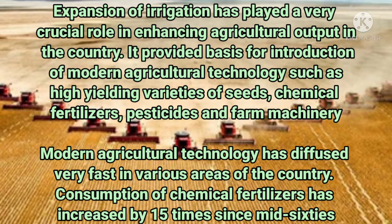What was the growth of agricultural output and technology? In the last 50 years there has been significant improvement in agricultural output and technology. The production and yield of many crops have increased. Irrigation has played a crucial role in enhancing agricultural production — irrigated area increased from 20.85 to 54.66 million hectares from 1950–51 to 2001. Many modern agricultural technologies have diffused very fast across various areas of the country.